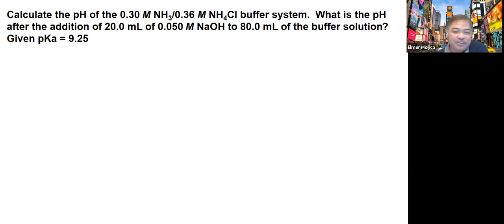In this case, the buffer system that we have is ammonia. We are asked to calculate the pH of 0.30 M ammonia and 0.36 M ammonium fluoride buffer system. What is the pH after the addition of 20 mL of 0.05 M NaOH to 80 mL of the buffer solution?